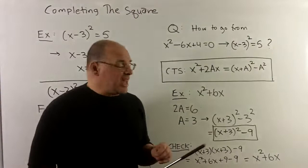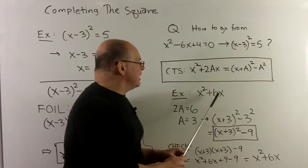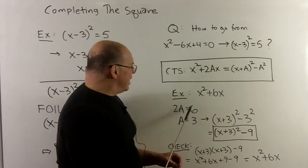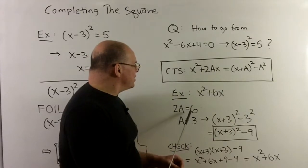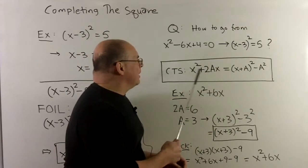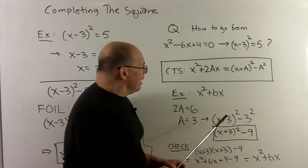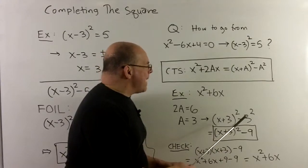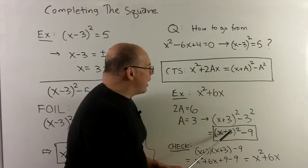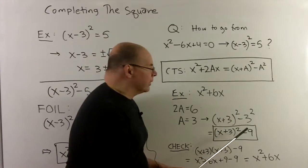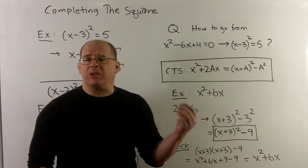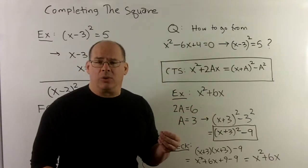Let's look at an example. If I have x squared plus 6x, we identify the coefficient before the x — that's 6. So 2a equals 6; I cut it in half to get a equal to 3. Dropping it into the completing the square formula, I get x plus 3, quantity squared, minus 3 squared, which becomes x plus 3 squared minus 9. We could check our work by expanding back out.